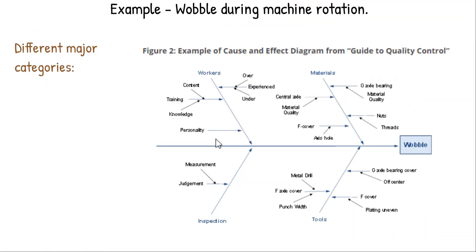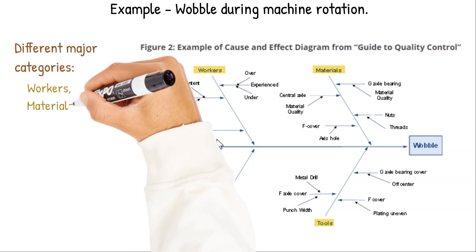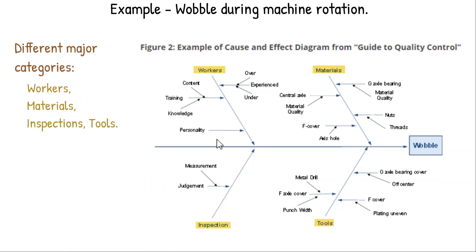Here's an example from the book: wobbled during machine rotation from Dr. Ishikawa's guide to quality control. It's answering the question why does wobble occur and you look for the most likely causes of that.